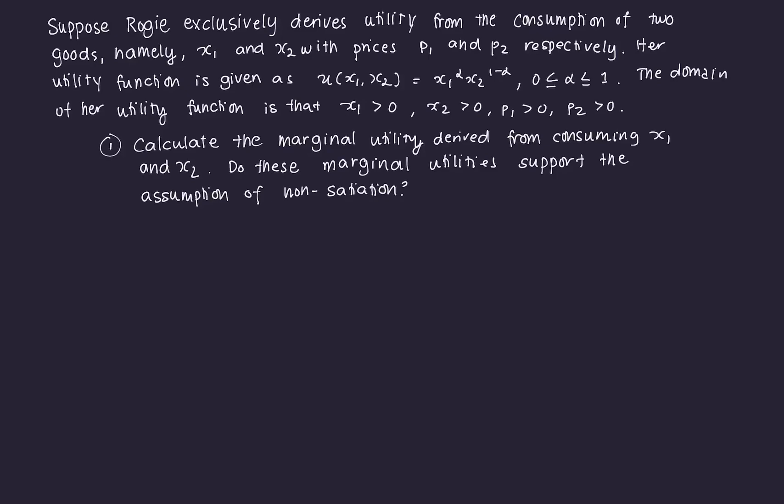Hi everyone. In this video, we'll get into the mathematical part of the theory of consumer behavior, which is the utility maximization process and the expenditure minimization process. We're going to do that by doing an actual example. We'll do a two-good case example for the duration of the series, and we'll be using this exact problem for all the other videos, so it's connected — you can see all the properties we're going to prove and derive.